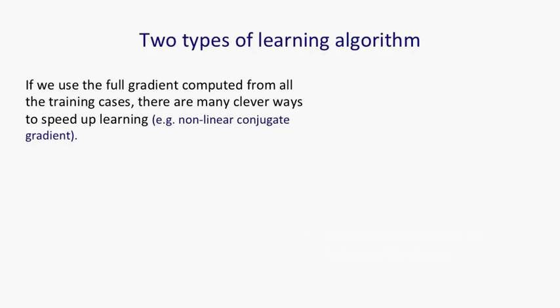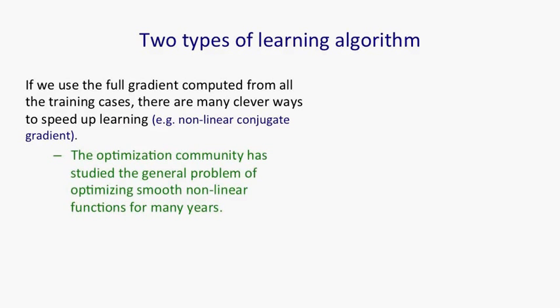So basically, there's two types of learning algorithms for neural nets. There's full gradient algorithms where you compute the gradient from all of the training cases, and once you've done that, there's a lot of clever ways to speed up learning. There's things like nonlinear versions of a method called conjugate gradient. The optimization community has been studying the general problem of how you optimize smooth nonlinear functions for many years.